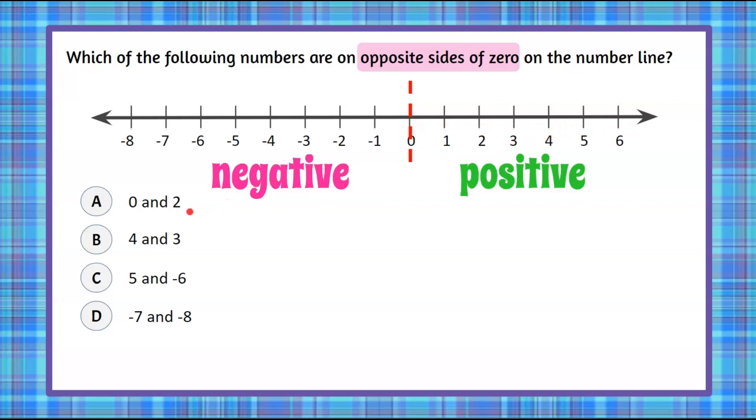Let's begin with A, and that is the pair of values zero and two. Let's plot zero and two. This is not on either side. Zero is actually on zero. It's not on the opposite side, so it doesn't have a side.